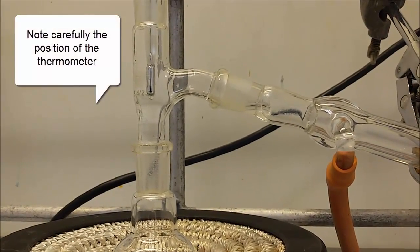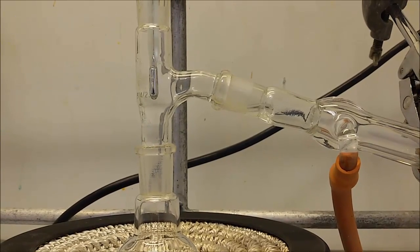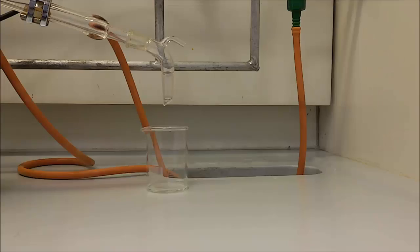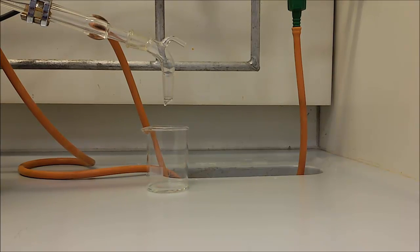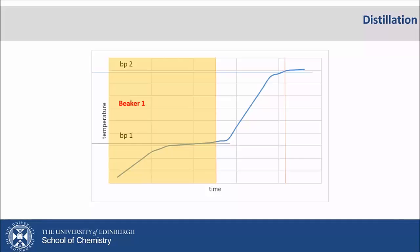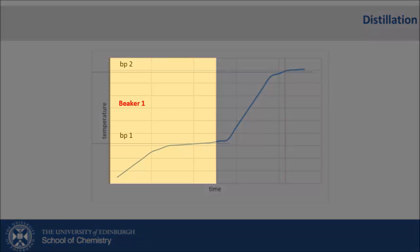You can see how the vapors are condensing on the upper parts of the setup. And the vapors that enter the condenser condense into the beaker. This is the first component of the mixture. The temperature rises and then reaches the boiling point of it.